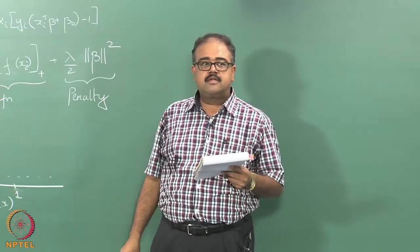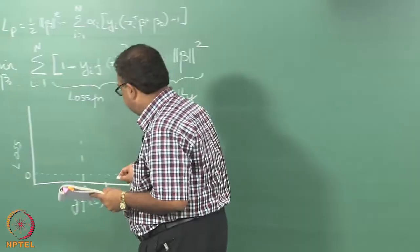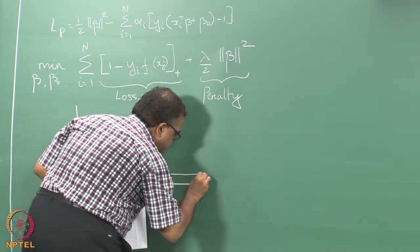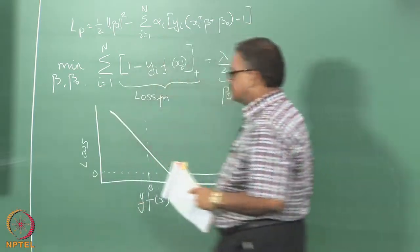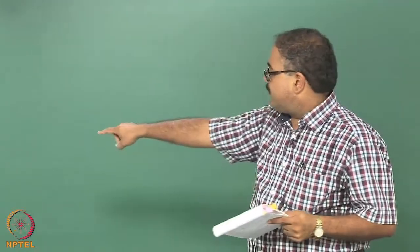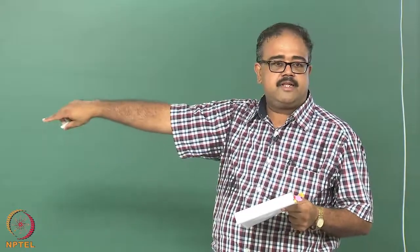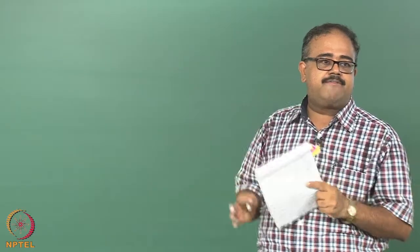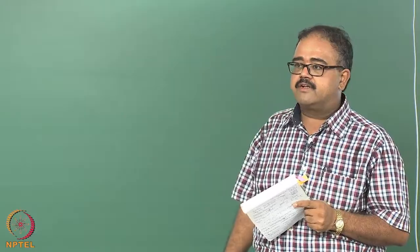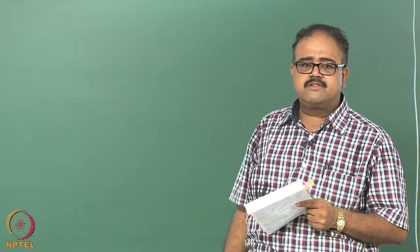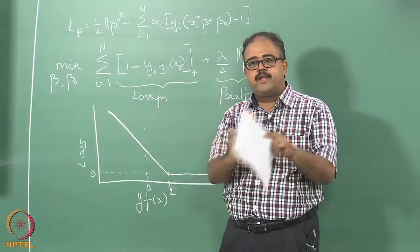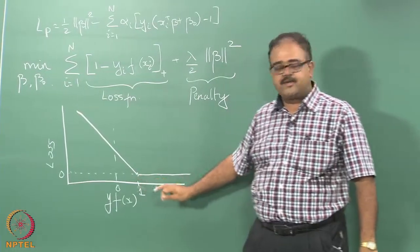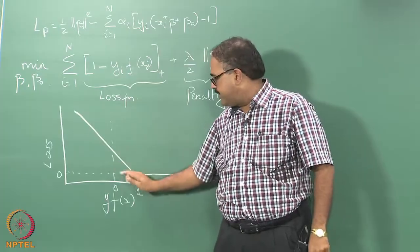How will this loss function look? When y times F of x is 1 or beyond, the loss will be 0. Until y times F of x becomes 1, it is going to be a linear function — it is just 1 minus y times F of x. This kind of loss function is like a door or a book opening on a hinge — two flaps opening at a hinge point.